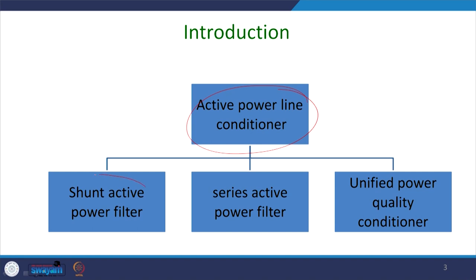You can have a shunt active power filter that we are going to cover, which generally injects current in shunt — we will see the topology in the next slide. Thereafter, there is the series active power filter, which injects voltage in series and thus compensates voltage sag, swell, and other problems related to voltage issues.